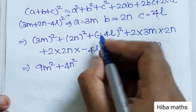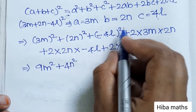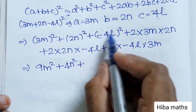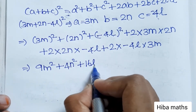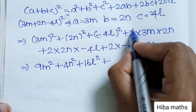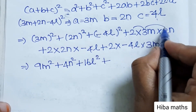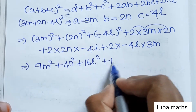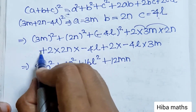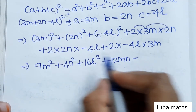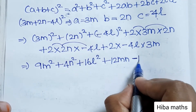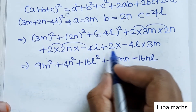...(−4l)² = minus into minus = plus, 4×4 = 16l². Plus 2×3×2 = 12mn. Now plus or minus gives minus: 2×2×4 = 16nl.